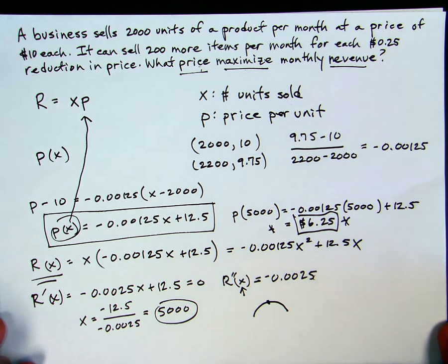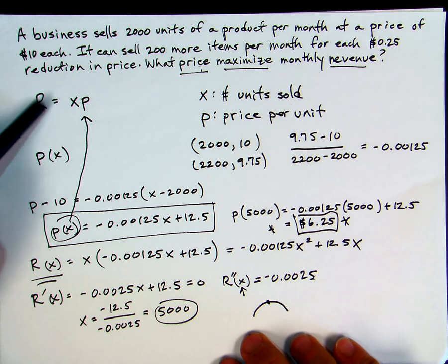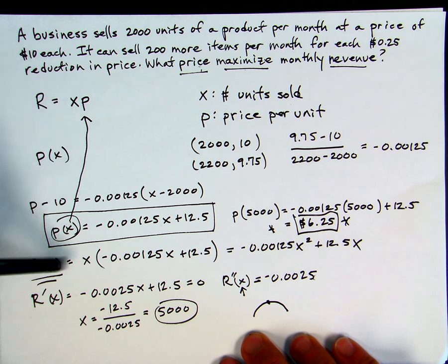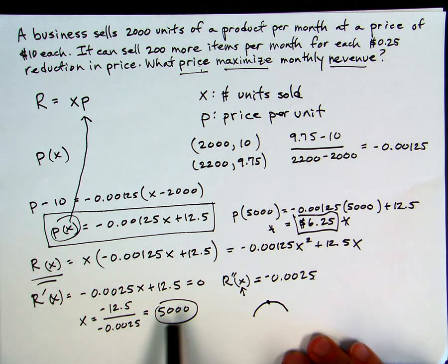In this one, we had a bit more work to do in finding the revenue function. To find it, we needed to find the demand function and use information given in the problem, then plug it into the revenue function. It's then very similar to the first problem — we were trying to maximize revenue — except at the end, we need to find the number of units sold and then use the demand function to determine what price maximizes monthly revenue.